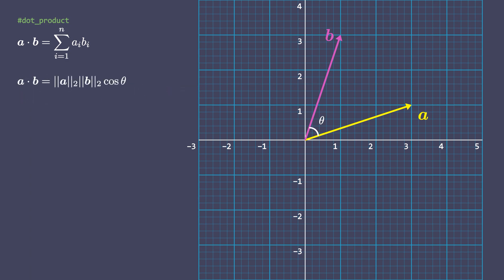Geometrically, it is the product of the Euclidean magnitudes of the two vectors and the cosine of the angle between them. Both these definitions are equivalent when using cartesian coordinates.